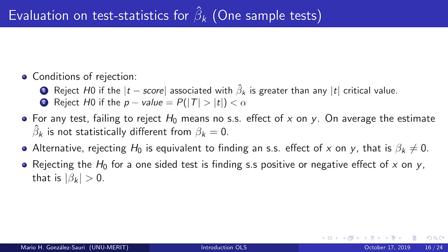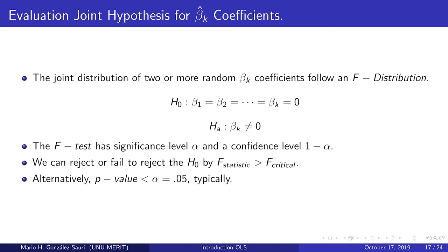In some cases we are interested in the joint hypothesis for two or more beta_k coefficients. This joint distribution is no longer described by a normal distribution but by an F-distribution. Under the null, a set of beta_k coefficients equals zero; the alternative is that at least one is different from zero. The F-test also has a significance level and confidence level. We reject the null if the F-statistic is greater than the F-critical value, or if the p-value is smaller than 0.05 for a 95% confidence level.